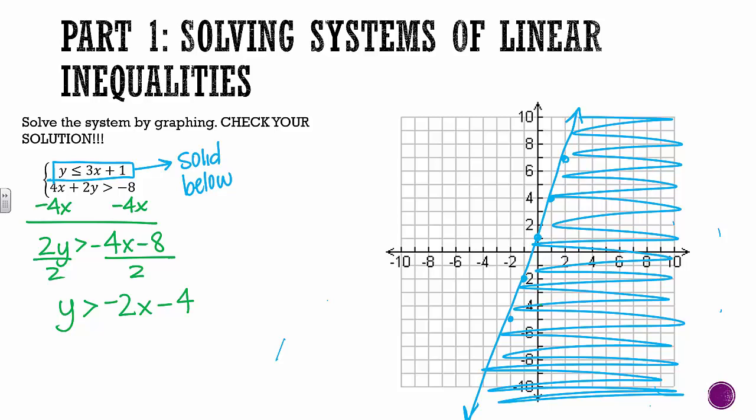So we get y has to be greater than negative 2x minus 4. So now that it's in this form, I know where to start. I can go down two over one, or up two forward one. And because we rearranged this, now we can kind of cheat and look at where we need to shade in. So we need to draw a dashed line.